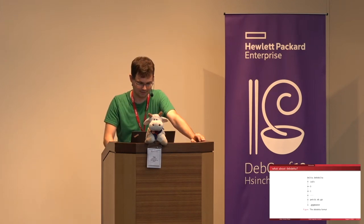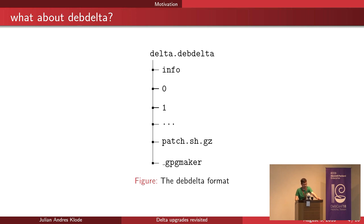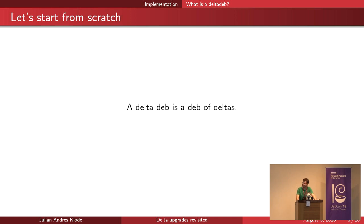So what about deb delta? I would say it's complicated. This is a deb delta — that's the existing format that has been around for a few years. It consists of an info file with some metadata, a set of numbered patch files, a script, and an inline signature. The problem with the deb delta format is basically the script, because the script could do anything — you can't check that the script is safe, and it's not a good idea to run a shell script just to regenerate a deb from a delta.